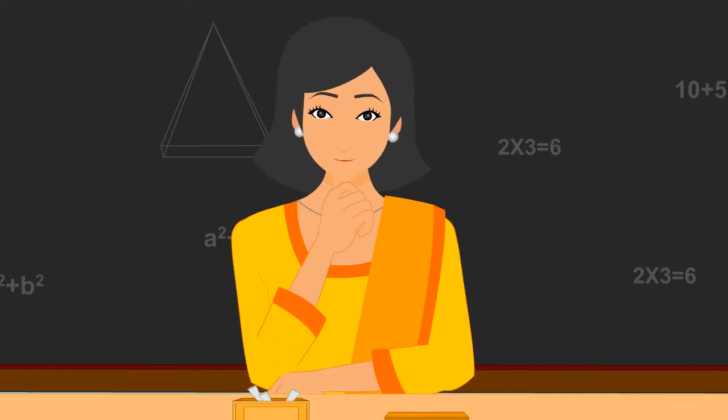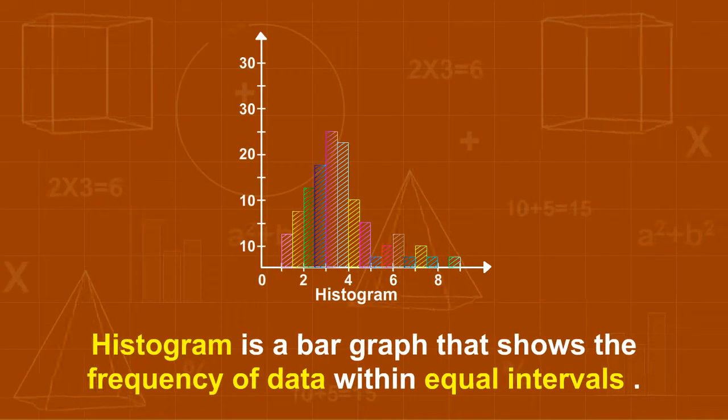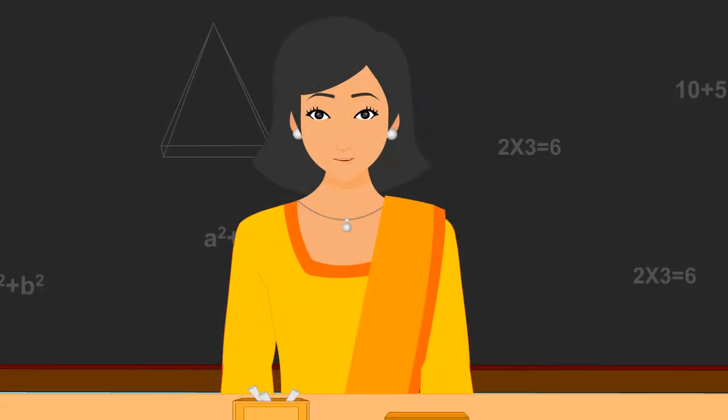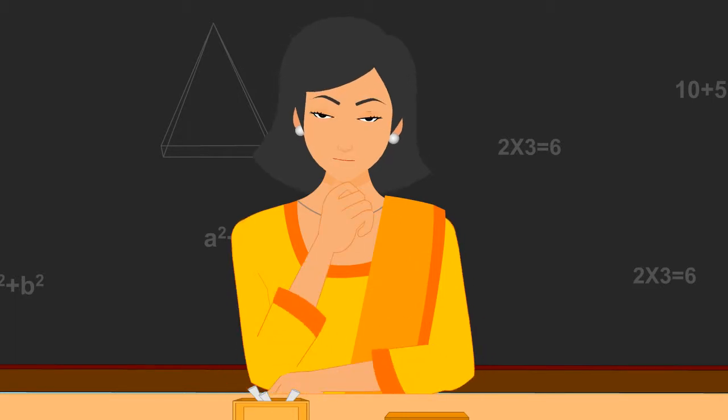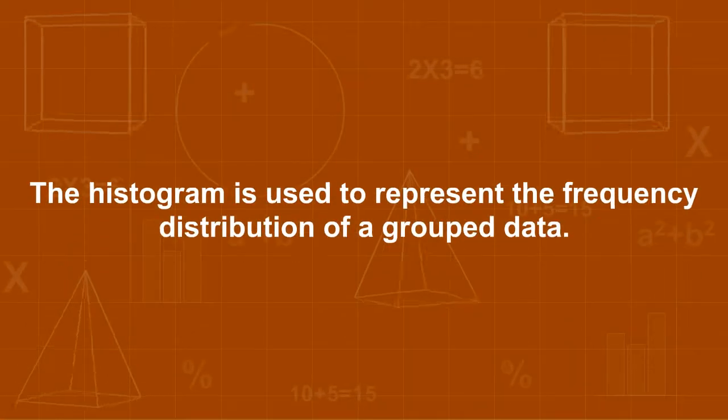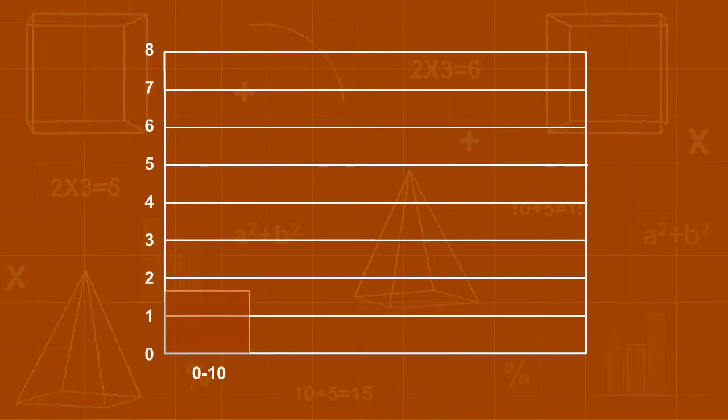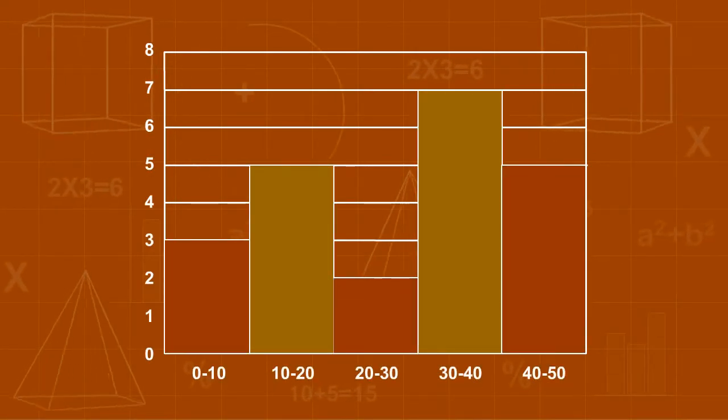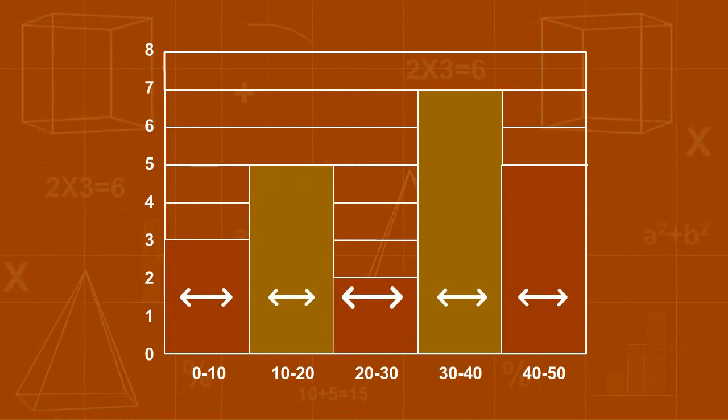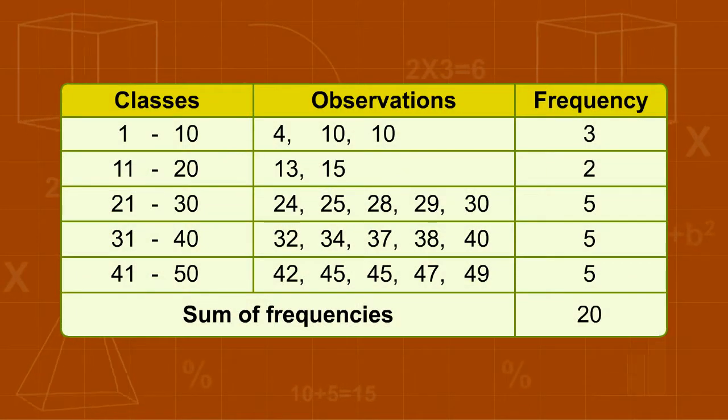Now, children, if you have understood the basics of a bar graph, we will try to learn and understand Histogram. Histogram is a bar graph that shows the frequency of data within equal intervals. A bar graph is generally prepared for ungrouped or independent data, whereas Histogram is prepared for grouped data. In general, the Histogram is used to represent the frequency distribution of a grouped data. Histogram is plotted by taking class intervals as the base of the rectangle. The bases of the rectangles are of equal width and they are adjacent to each other. The height of the rectangle represents their frequency distribution. We will try to understand by taking an example.